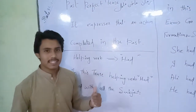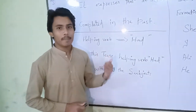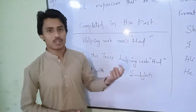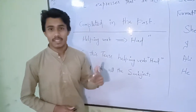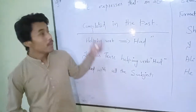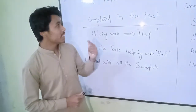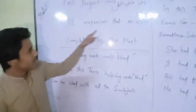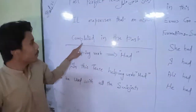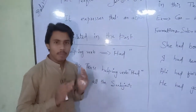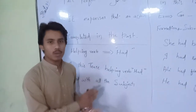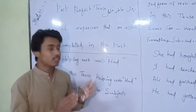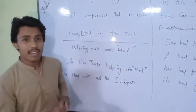This is a tense that tells us that an action was completed in the past — that is known as the Past Perfect Tense, or Samar Mazi Mukamal. It expresses that an action was completed in the past, and if any work has been done in our past, we will say that this is a Samar Mazi Mukamal sentence.